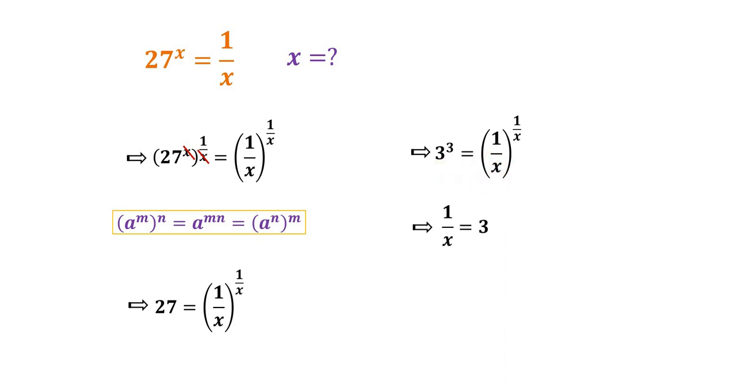Then we have 1 over x is equal to 3. So 1 over x is equal to 3, and x is equal to 1 over 3. So this is the final answer.